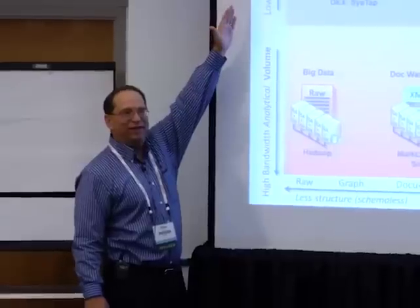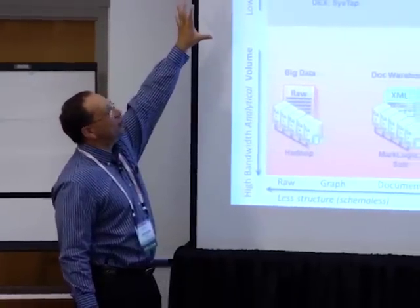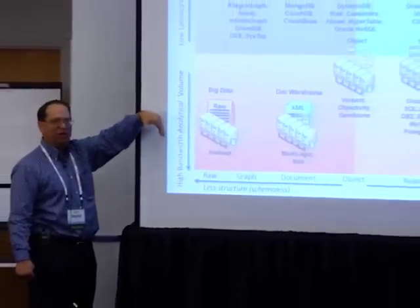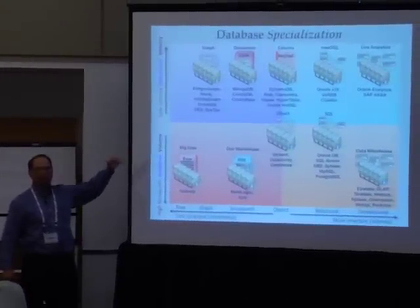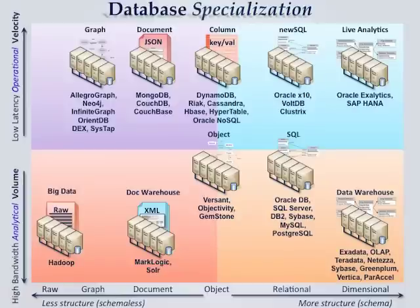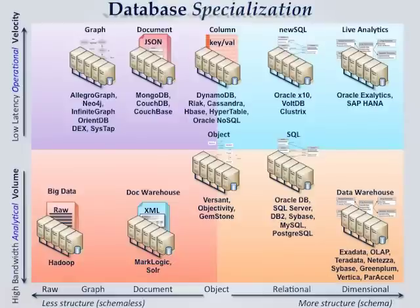Here's the slide that summarizes my whole research. I have two dimensions: one is the hardware dimension — low latency, fast, online transaction applications at the top, all about velocity; and high bandwidth, analytical at the bottom. Databases automatically choose one of these optimizations whether they intend to or not. Horizontally, there are five different major paradigms, plus raw — which is just whatever data format you have — and that's the space of NoSQL.